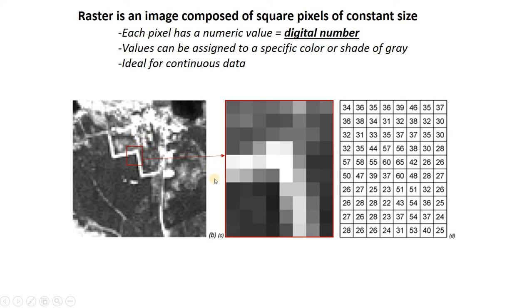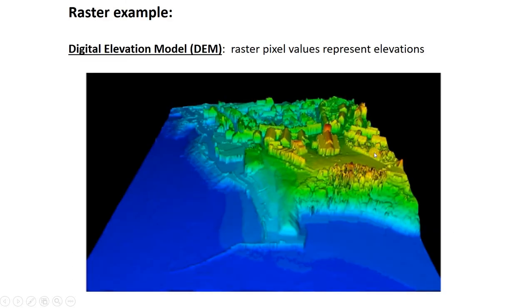We use raster data for continuous data sets because we usually want to have a data value at every point in our map. One popular example is digital elevation data — each pixel has the elevation of the land surface in meters or feet. When you look at the raster as a whole, you see a map of land surface elevation. There's a name for that: it's called a digital elevation model, or DEM.